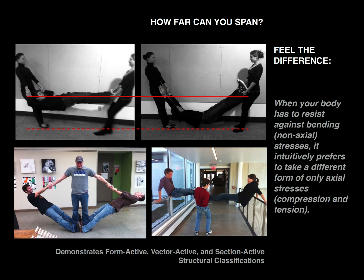In the how-far-you-can-span challenge, give students prompts. First, ask them to be as stiff as possible — this introduces bending stress, and Michael can feel the tension he has to hold in his stomach pulling himself flat. Then ask what form it would rather take, and of course he takes the hanging chain, so he's fully in tension. The other spanning challenge shows equilibrium through a triangular form. The connection wants to pull apart, but you can understand which elements are in compression, which in tension, and which in bending.